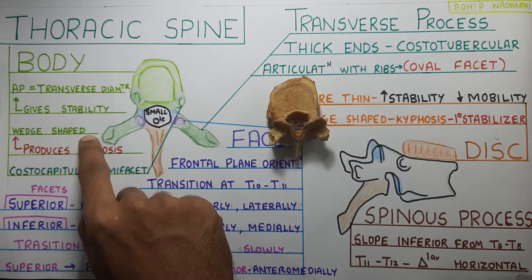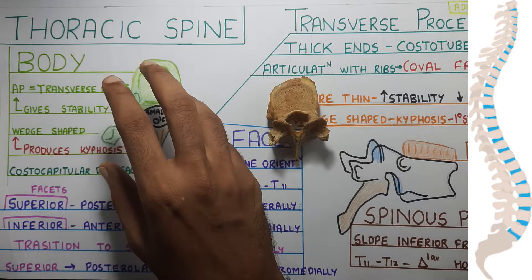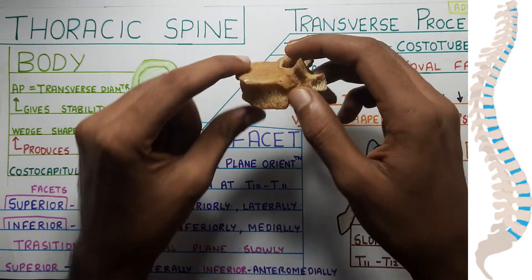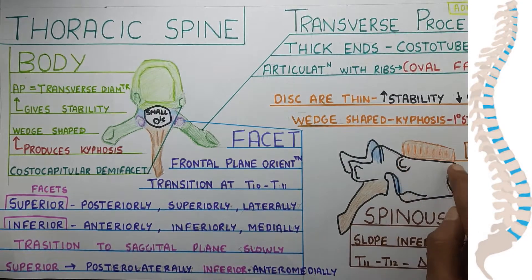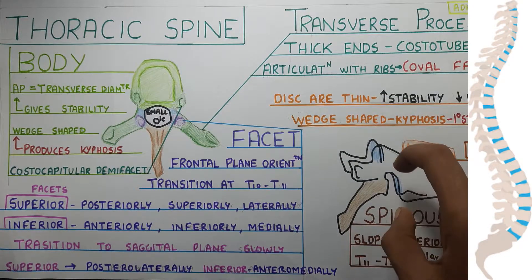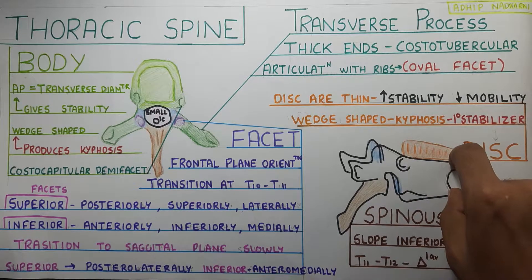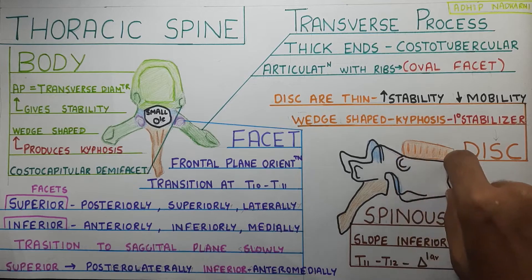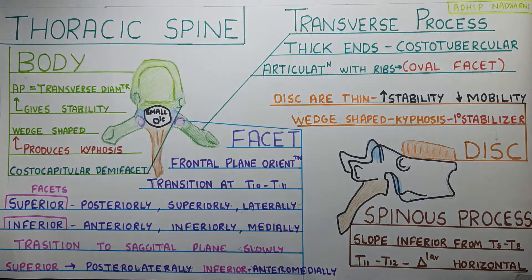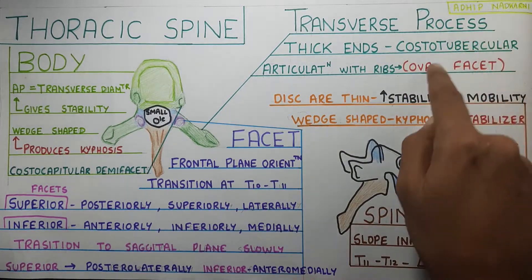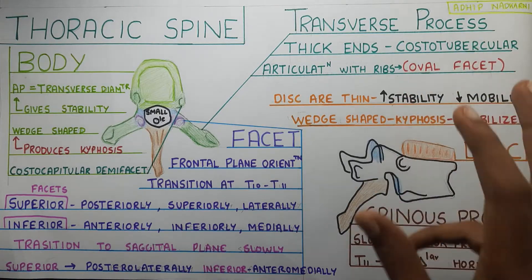Apart from this, the body is wedge-shaped, which produces the kyphosis at the thoracic spine. This part is thicker compared to the end part anteriorly — it is wedge-shaped. This posterior distance is way more than the anterior distance. If you keep stacking more vertebrae on top of each other like this, it will form a kyphosis — a kyphotic spine which is seen in the thoracic region.